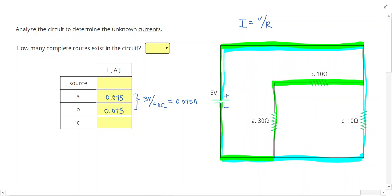For resistor C, we have 3 volts to push through 10 Ohms giving us 0.3 Amps.